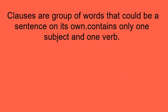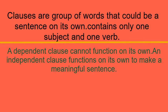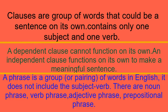Now let me revise what we've done today. First, we worked on clauses — a group of words that could be a sentence on its own, containing one subject and one verb. There are two types: a dependent clause, which cannot function on its own, and an independent clause, which functions on its own to make a meaningful sentence. A phrase is a group or pairing of words that does not include a subject or verb. Types of phrases: noun phrase, verb phrase, adjective phrase, and prepositional phrase.